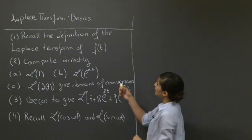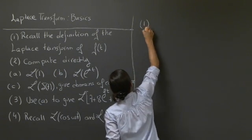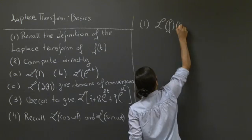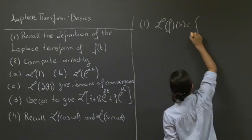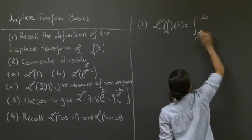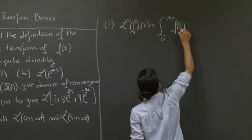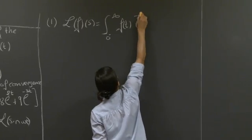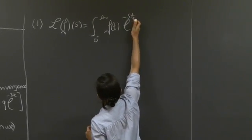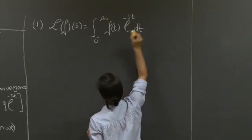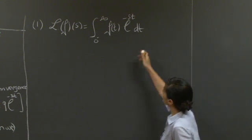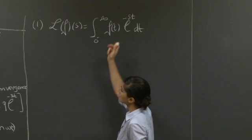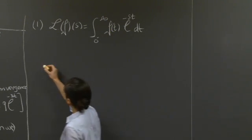Welcome back. So let's start with the definition. The Laplace transform of the function f was defined as the integral from 0 minus to infinity of the function f of t, exponential minus st, dt. Note here that the interval of integration is 0 minus to infinity.